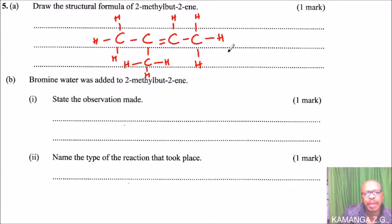Part B: Bromine water was added to 2-methylbut-2-ene. This is an alkene, and what happens is that bromine water, which is yellow in color, when you add it to 2-methylbut-2-ene, it decolorizes the bromine water.